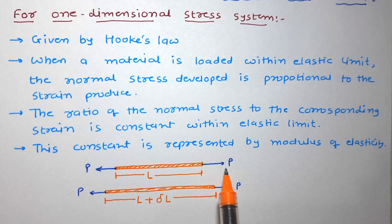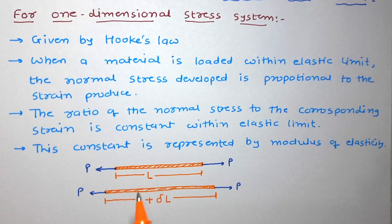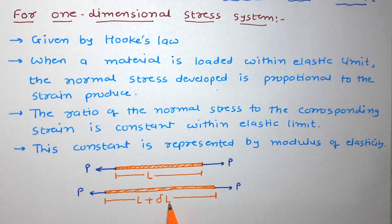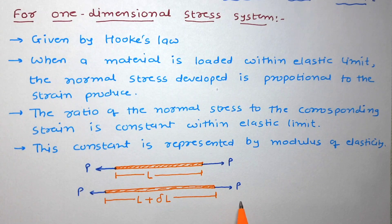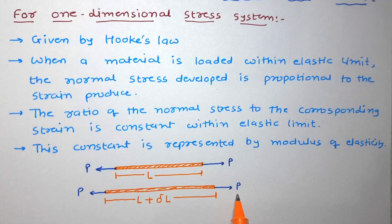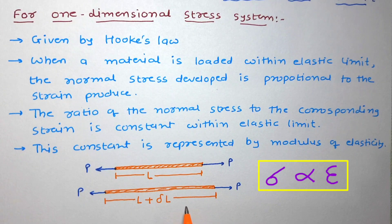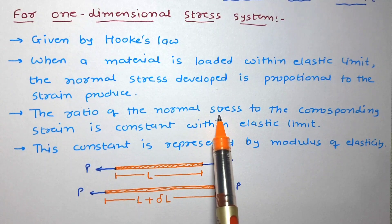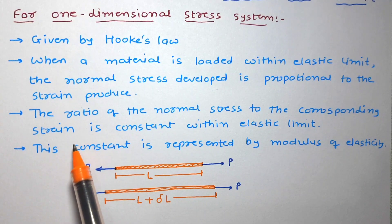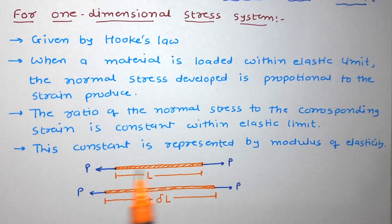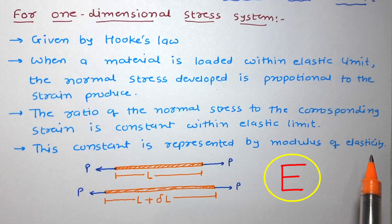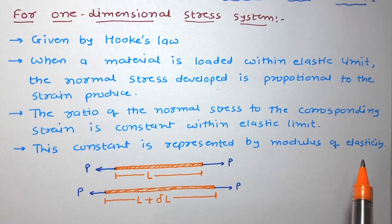When such material is acted upon by external load P, its length increases and it reaches L plus delta L. This load P is applied up to the elastic limit. When such load is applied within the elastic limit, the stress produced in the material is proportional to the respective strain. This ratio of normal stress to the corresponding strain is constant within the elastic limit, represented by the modulus of elasticity or Young's modulus, denoted by E.